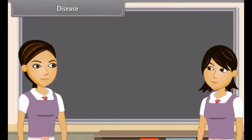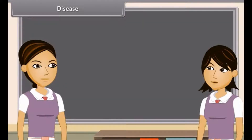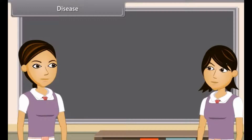When we are unhealthy, we are having one or more diseases. Disease means disturbed ease. Scientifically, disease can be defined as a disordered or incorrectly functioning organ, part, structure or system of the body resulting from the effect of genetic or developmental errors, infection, poisons, nutritional deficiency or imbalance, toxicity or unfavorable environmental factors — illness, sickness, ailment.